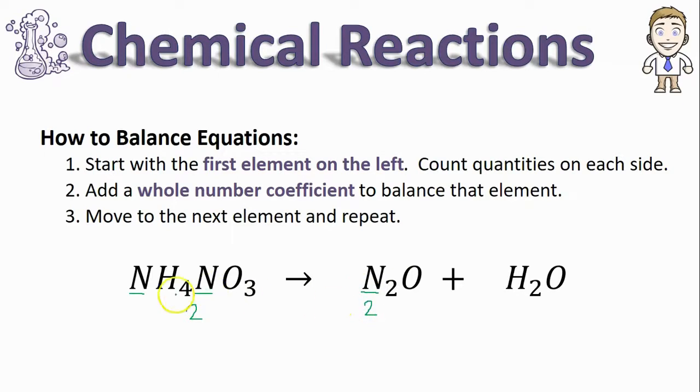The next element is hydrogen and I see that there's four of those on the product side. Here's hydrogen but there's only two, so if I put a coefficient of two to double that to a four, now my H's are balanced as well.